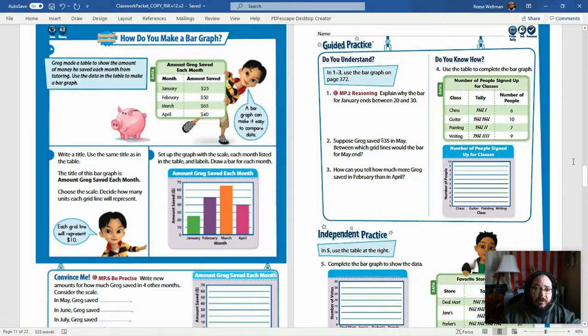Hi everyone, today I'm going to go over the guided practice and independent practice sections for Savvas Envision Math 2.0 third grade, lesson 7-3. This is making bar graphs. I am going to start on page 372 and do 372 and 373.